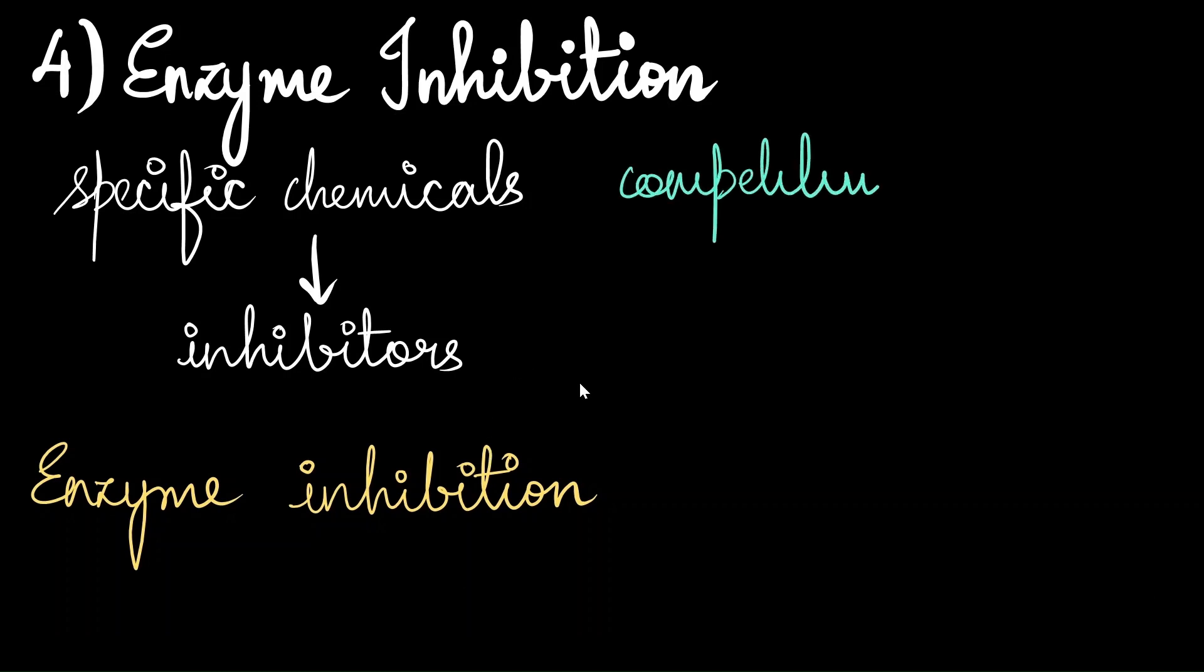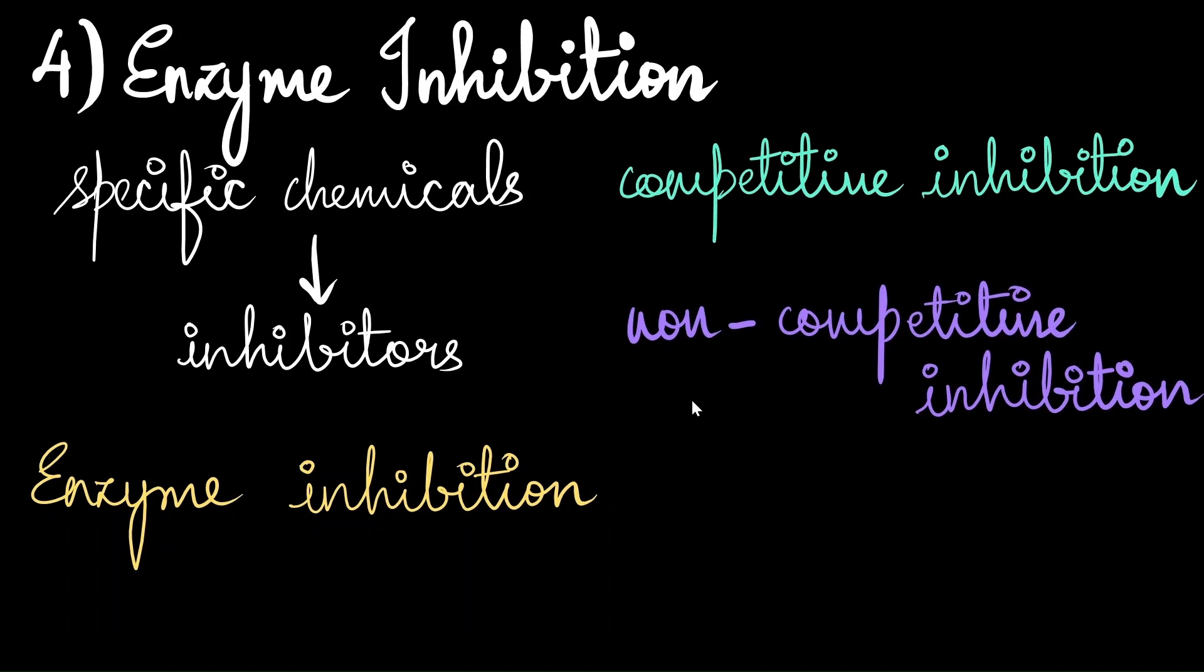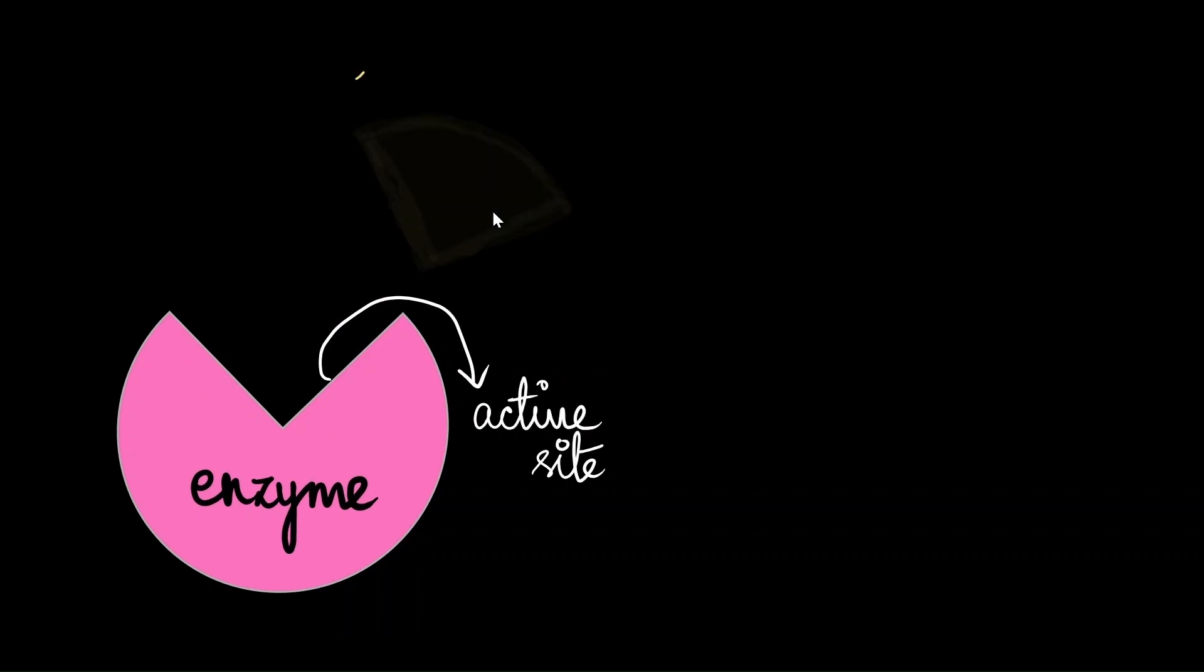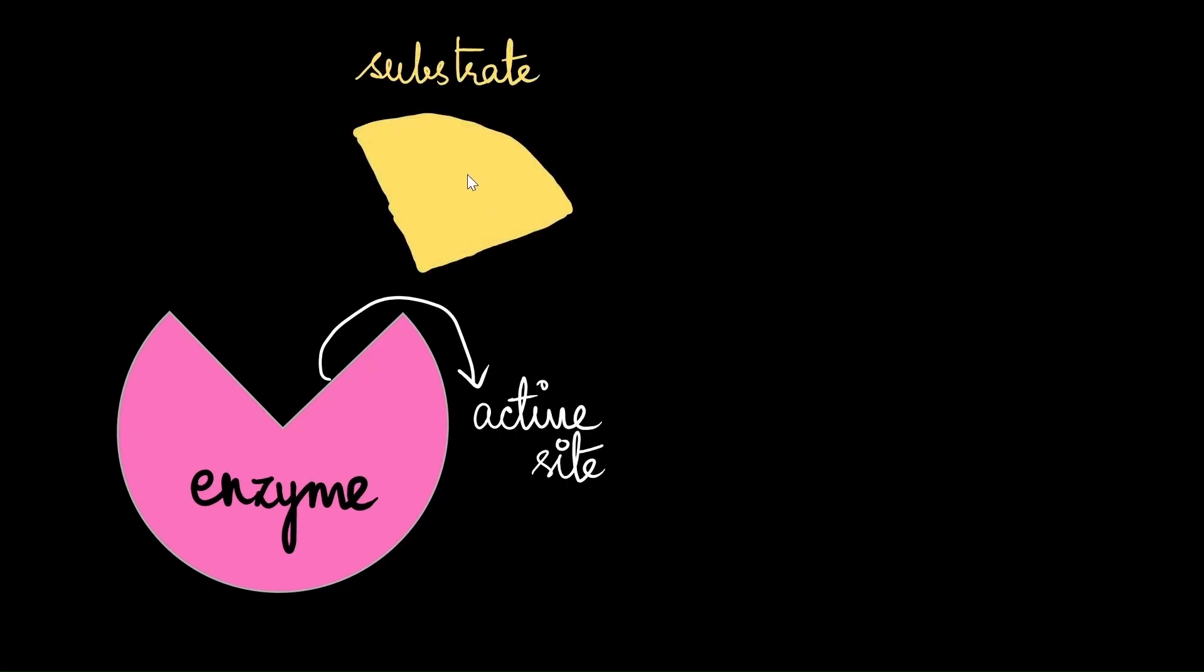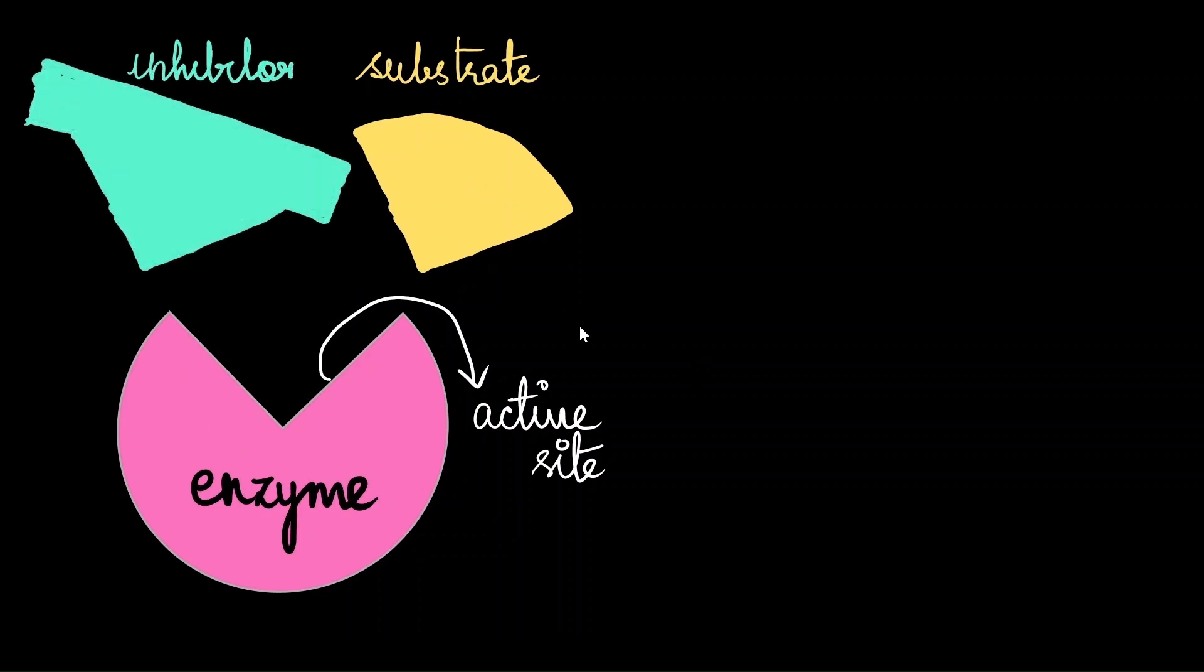We have competitive inhibition and non-competitive inhibition. In competitive inhibition, we have an enzyme which has its own active site. And the substrate is designed in a way that it fits into the active site. But there is an additional molecule, which is inhibitor, that competes with the substrate to bind to the active site. That's because the binding area is very similar to that of the substrate. So, sometimes the substrate can bind to the enzyme, but sometimes the inhibitor can bind to the enzyme.